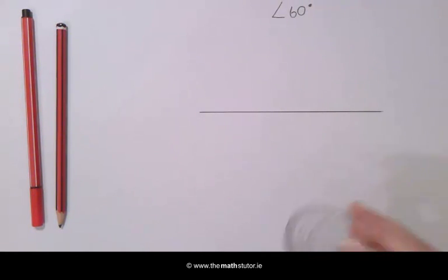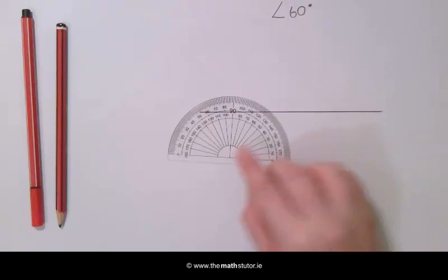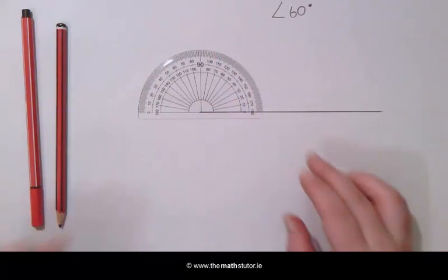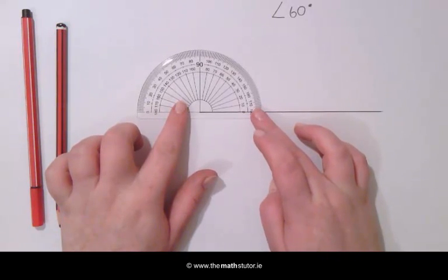Taking our protractor, we are going to place the center at the start of our given ray. Ensure that your protractor is lined up with the ray.